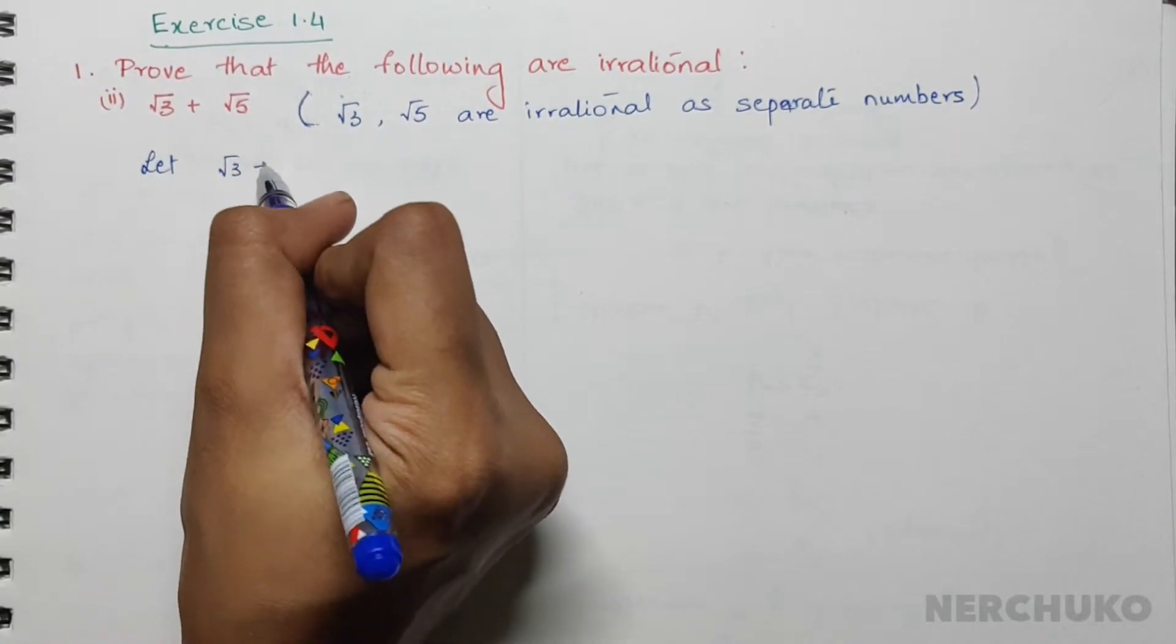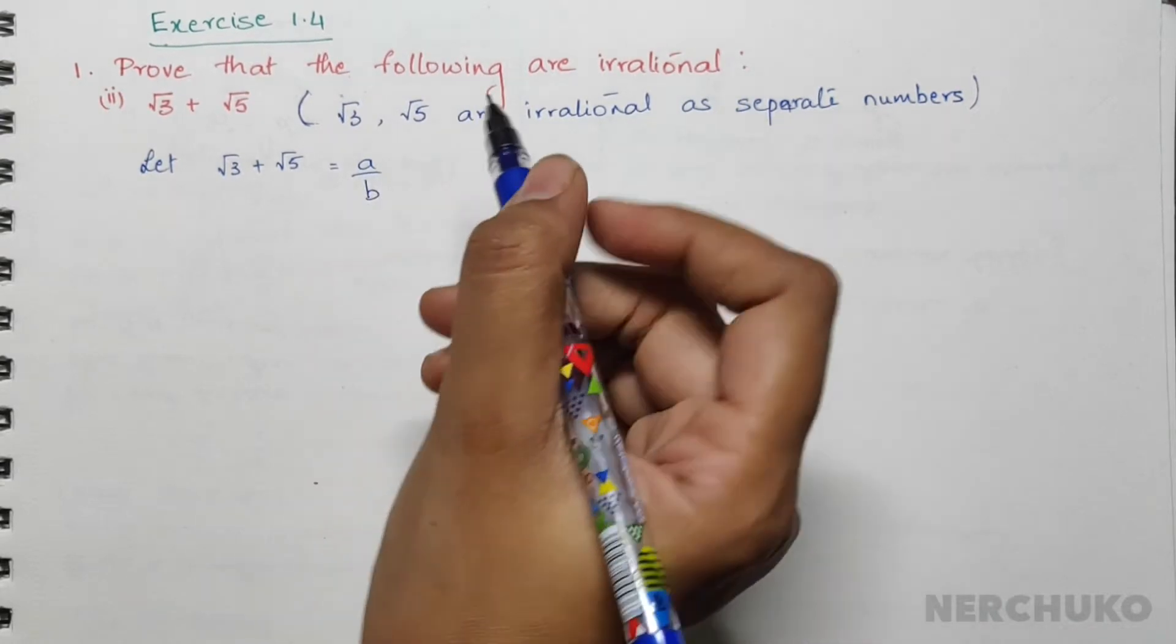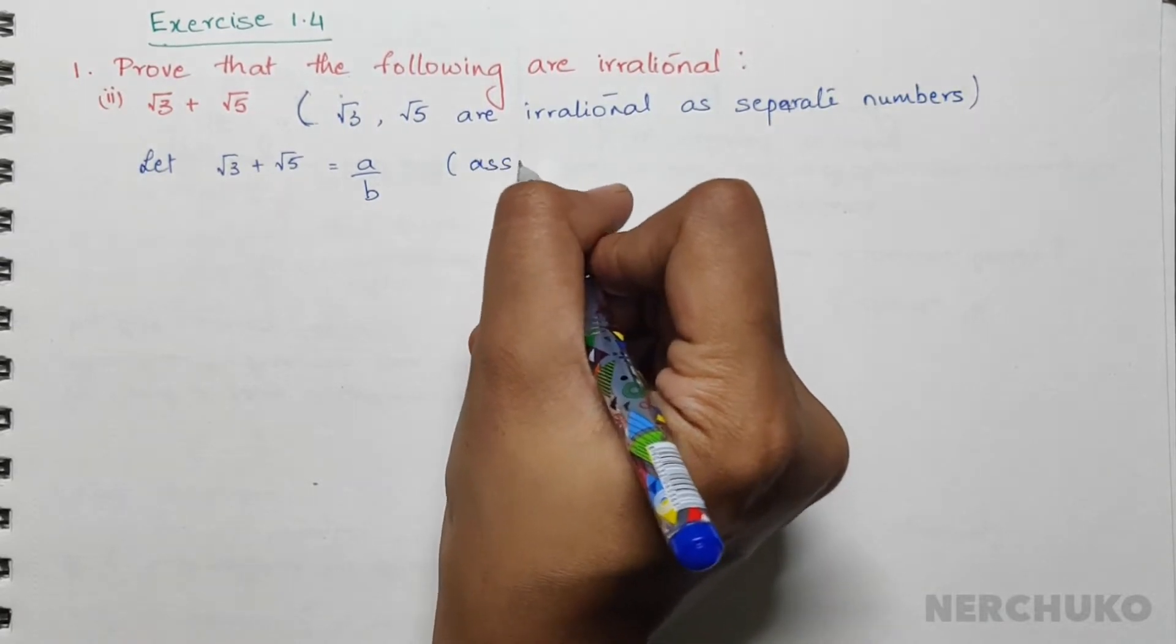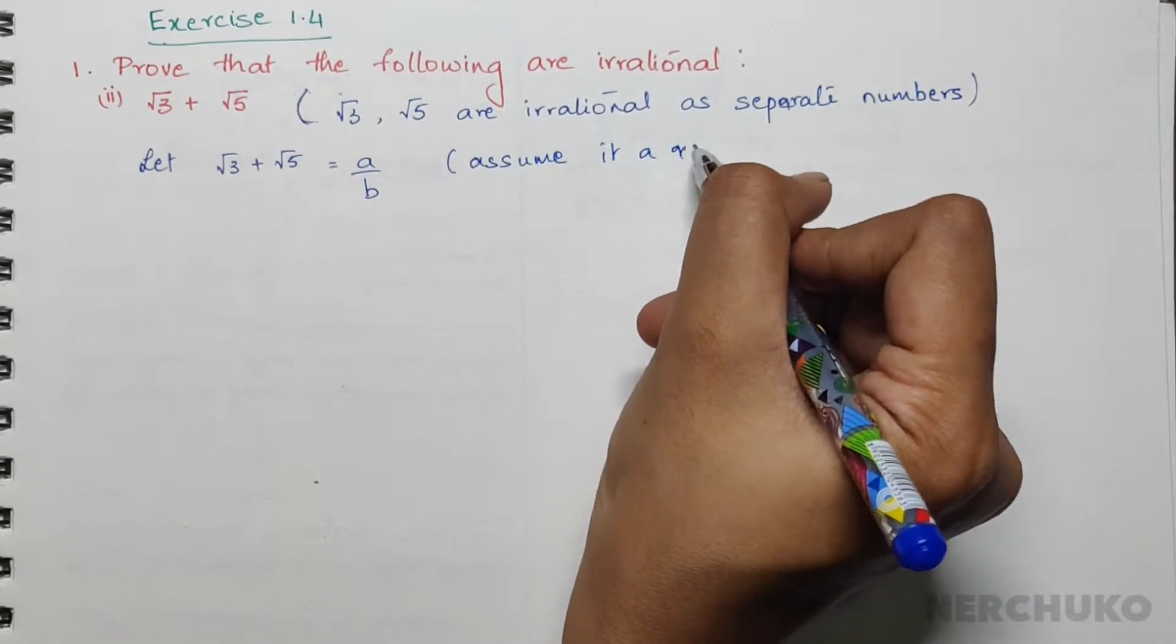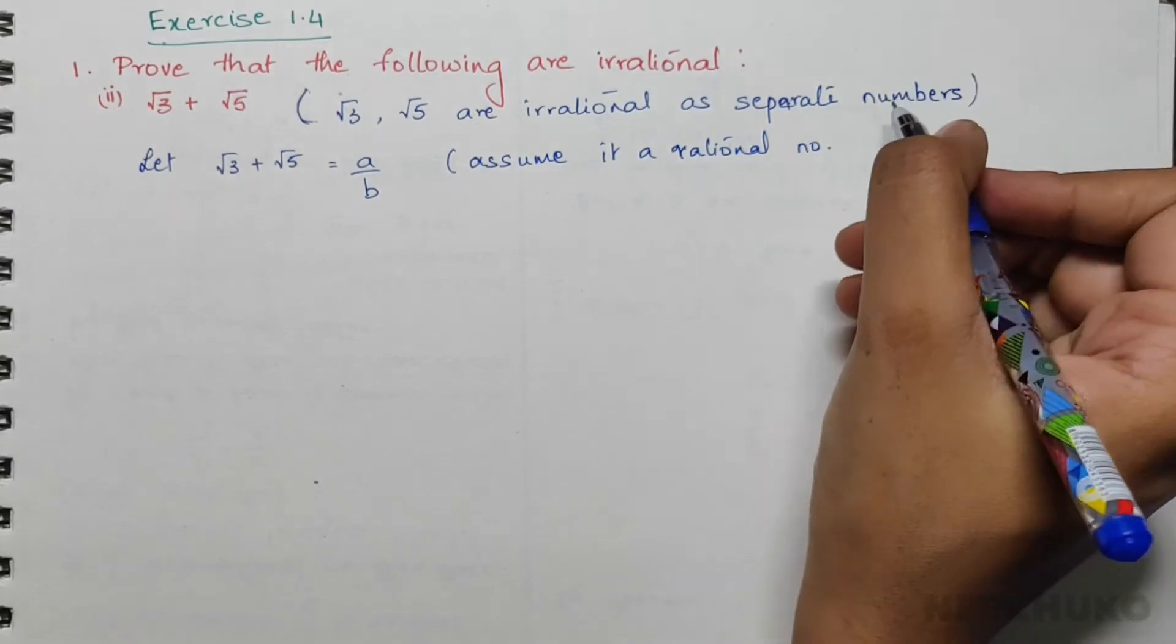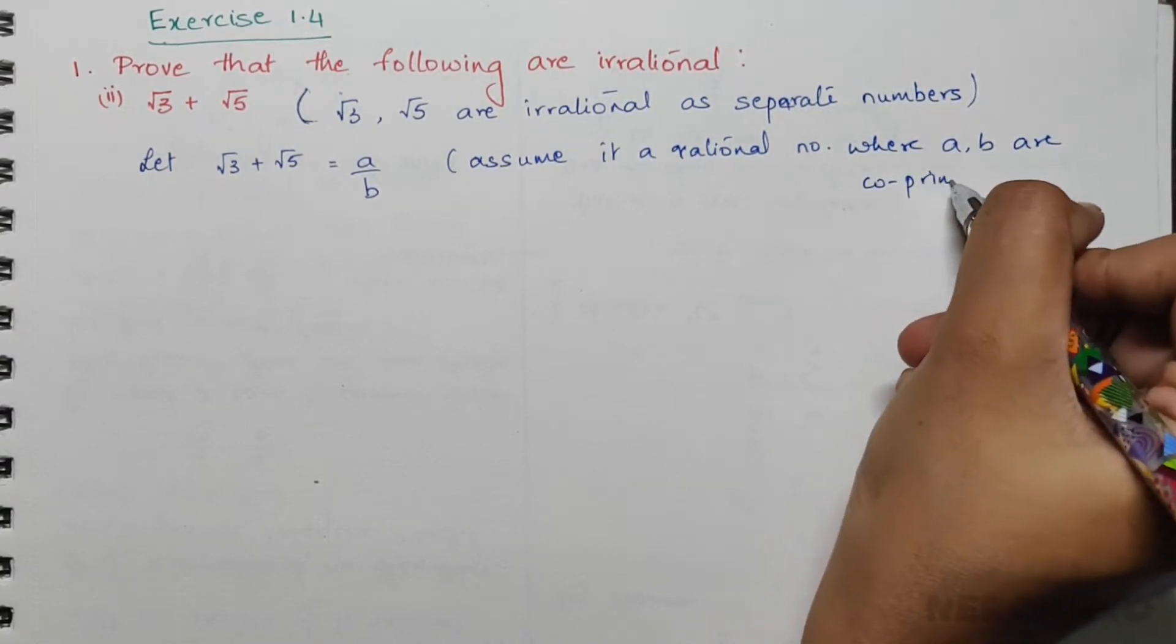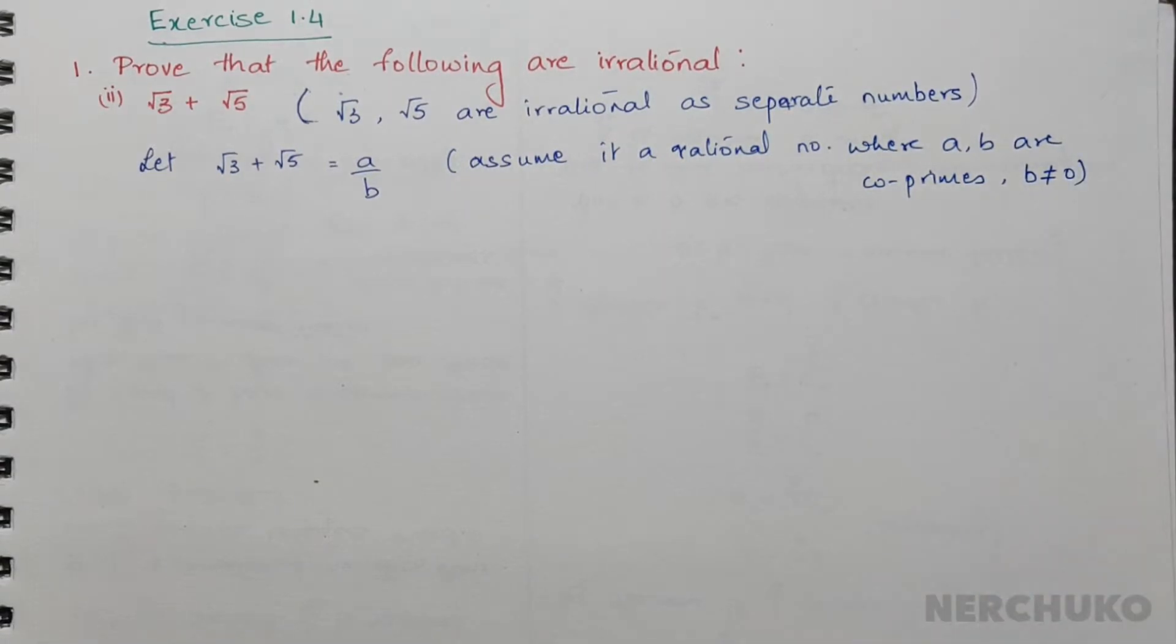Let √3 + √5 = a/b. Assume it is a rational number where a and b are co-primes and b is not equal to 0.